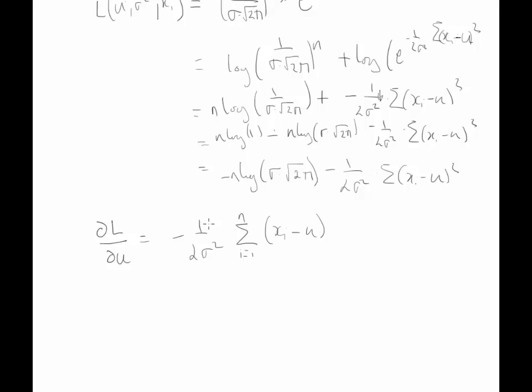So the 2 comes down here times minus 1, so we have the 2 cancel here and the minus cancel here as well. So we have 1 over sigma squared times the sum from i equals 1 to n of xi minus mu, and we set this to 0 because we want to minimize.